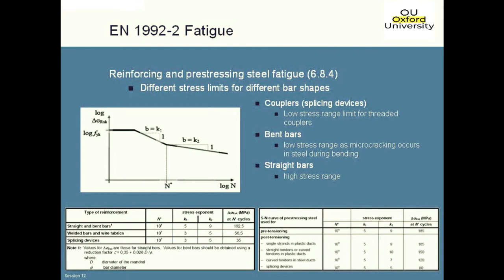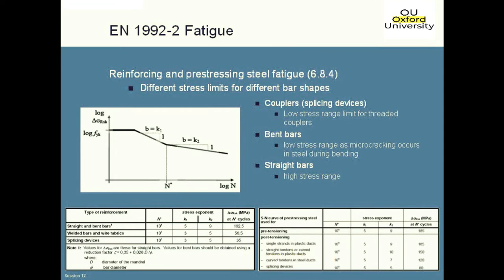The curves given in the Eurocode are basically for threaded couplers. If you start trying to put numbers in, you'll find that in old BS 5400 part 10 terms, a threaded coupler is somewhat worse than a class G detail — so you can't put much stress range into it. That's really the reason why the Highways Agency don't let us use threaded couplers in fatigue situations. Jessica and I have just spent the last three or four years replacing all the cable stays in a bridge in Penang, Malaysia because they had a stay system with threaded couplers and they're all basically breaking in fatigue — acoustic monitoring is listening to the bars snapping.